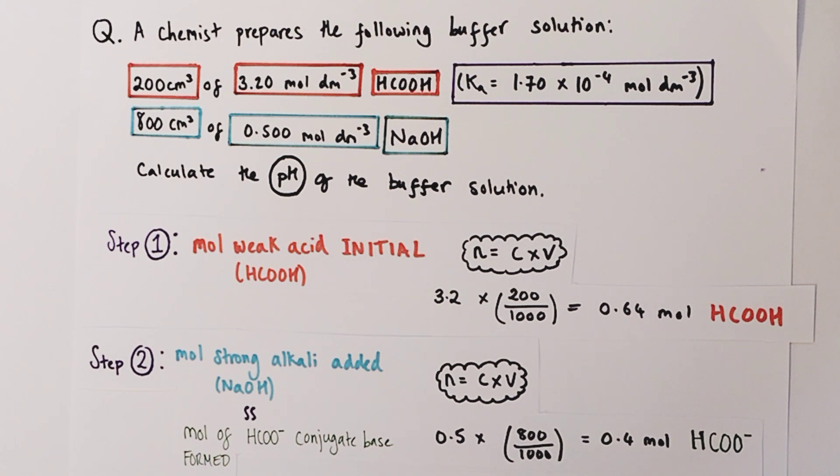We're going to look at how many moles of strong alkali are being added to that initial amount of methanoic acid. It's really important to understand that the alkali will react directly with that weak acid, creating salt and therefore generating conjugate base as part of the reaction. So we can make a really important assumption here: the moles of strong alkali being added is equivalent to the moles of conjugate base, in this case methanoate ions, being generated by the reaction. We now have a quantity of conjugate base to plug into our Ka expression later on. Moles equals concentration times volume, 0.5 mol per litre of sodium hydroxide being added, multiplied by the volume in dm³, that's 800 divided by 1000. We get 0.4 moles of methanoate ions and therefore conjugate base being generated by this reaction.